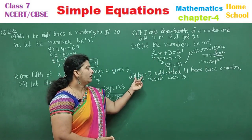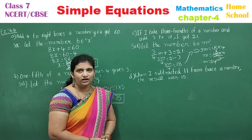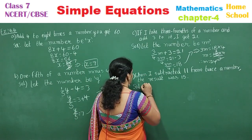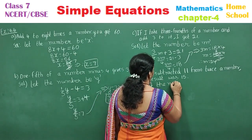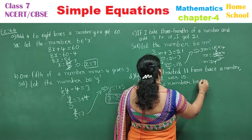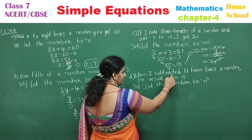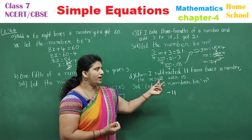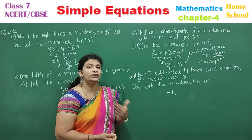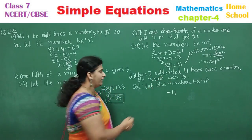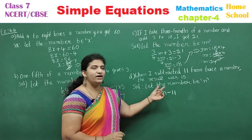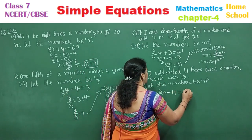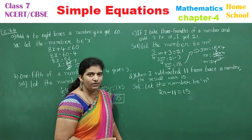Next sub-question D: 'When I subtracted 11 from twice a number, the result was 15.' Let the number be N. Twice a number is 2N. Eleven is subtracted from 2N: 2N − 11 = 15.